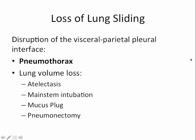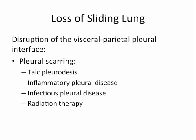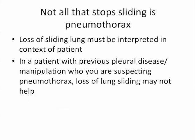When most clinicians see this, the first consideration they think about is pneumothorax. However, anything that causes lung volume loss can do this as well — atelectasis, main stem intubation, mucus plug, and pneumonectomy can all cause this. In addition, other causes of pleural scarring such as talc pleurodesis, inflammatory pleural disease, infectious pleural disease, or previous radiation therapy can cause it as well. The key point is that not every patient with loss of lung sliding has a pneumothorax, and this sign has to be interpreted within the context of the patient.